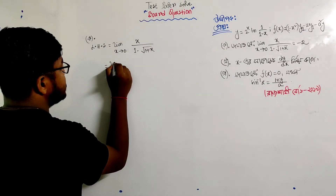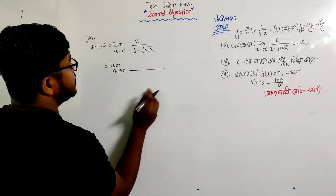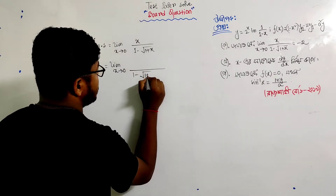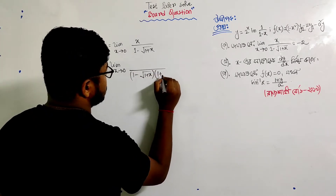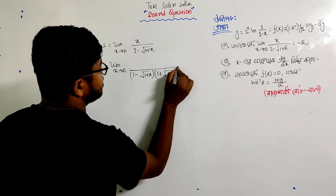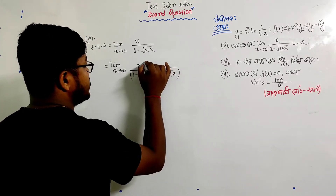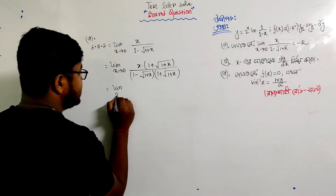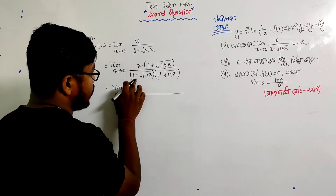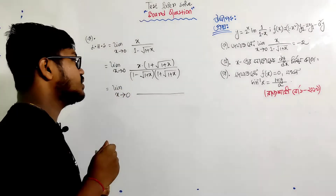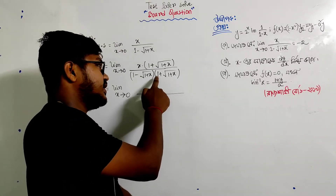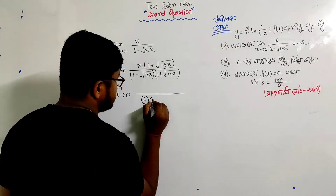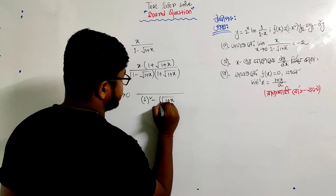So limit x tends to 0: if x tends to 0, then 1 minus root of 1 plus x. We multiply by 1 plus root of 1 plus x. Using the identity a squared minus b squared equals a minus b times a plus b, we get 1 minus (1 plus x) in the numerator.